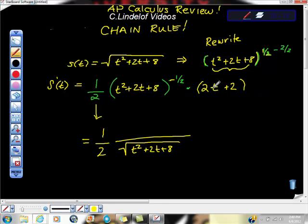And at the top, we're going to have 2T plus 2, which is the same as 2 times T plus 1. And if you can see why I did that, it's because this 1 half and this 2 cancel each other out. So I believe this is our derivative.